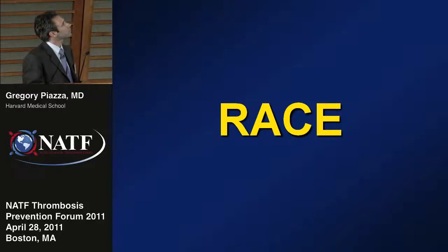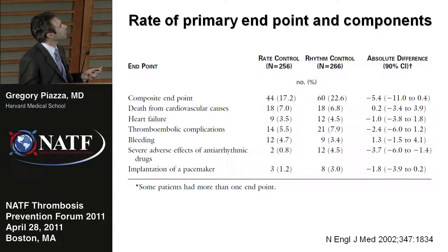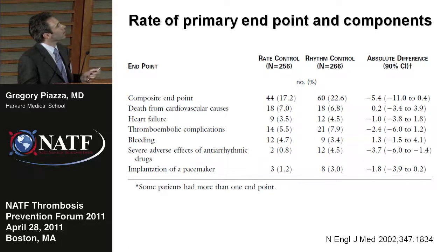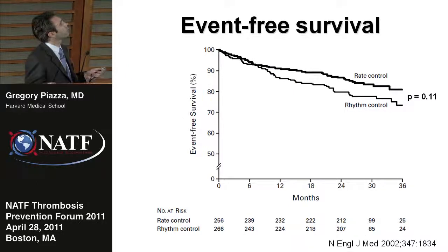In the RACE trial, a composite endpoint was used, consisting of death from cardiovascular causes, heart failure, thromboembolic complications including stroke, bleeding, and requirement for pacemaker implantation. This composite endpoint showed a trend towards being more frequent in patients assigned to the rhythm control arm. Importantly, severe adverse drug events related to the medications used were significantly increased in the rhythm control group. Event-free survival also trended towards being poorer in patients assigned to rhythm control.